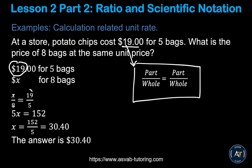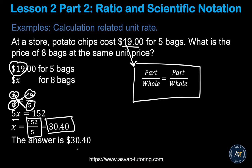Make sure you are consistent — if you mix up the setup you will get the wrong answer. Cross-multiply to get 5x equals 152. Divide both sides by 5, which gives you 152 divided by 5 equals 30.40. So the answer is $30.40 for eight bags.